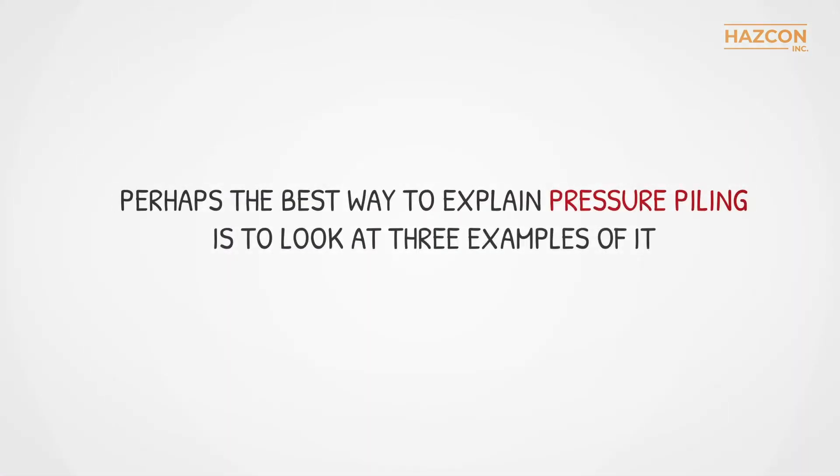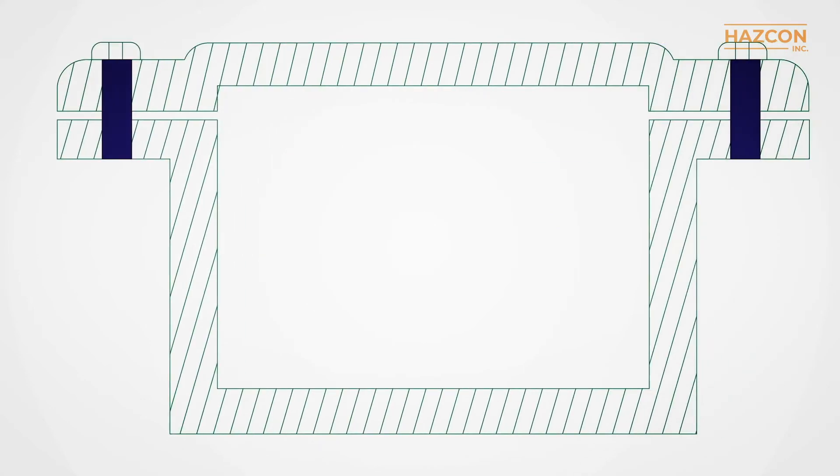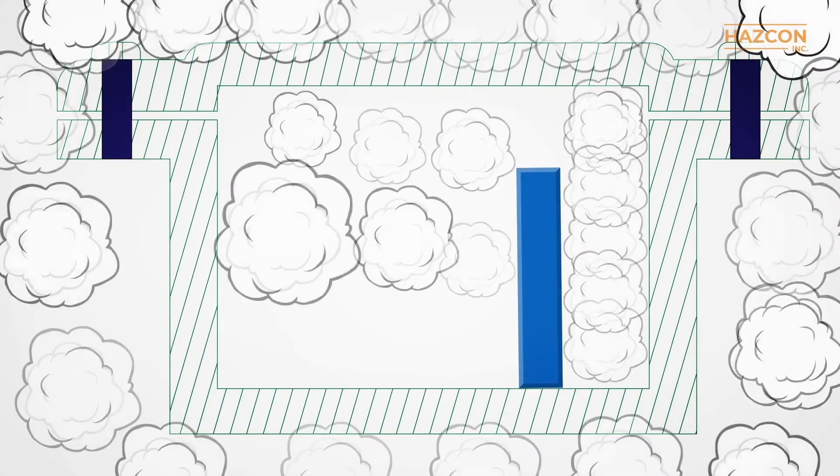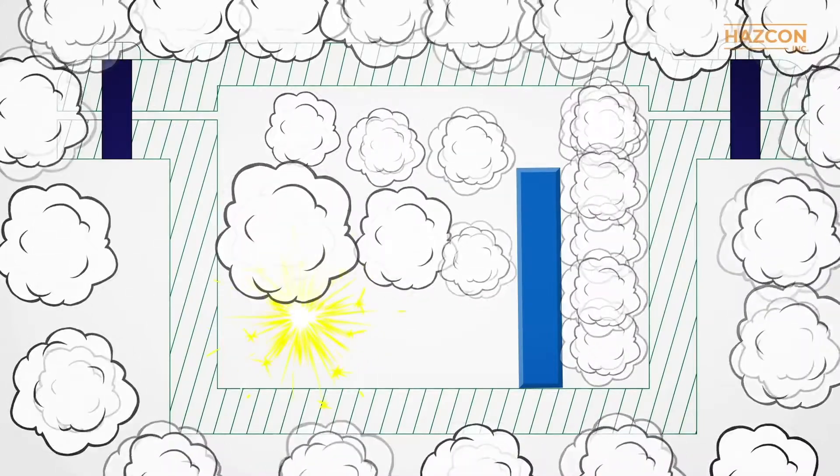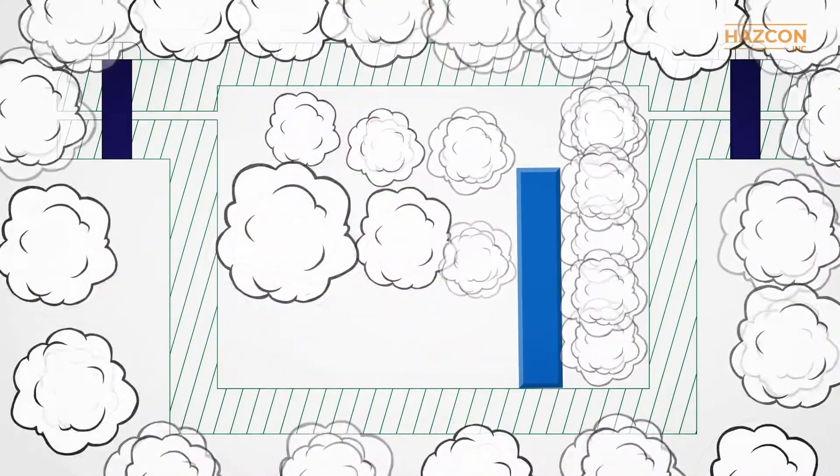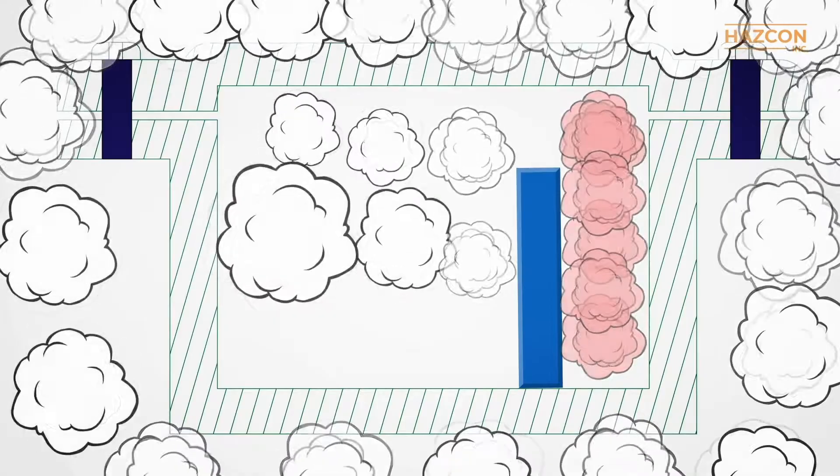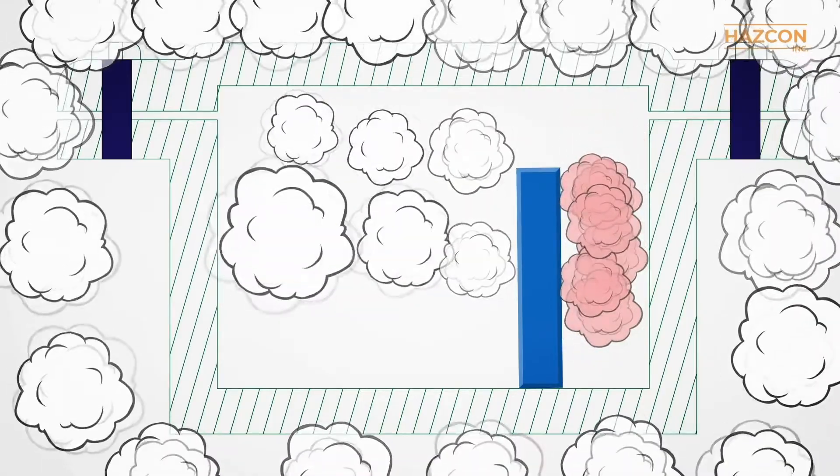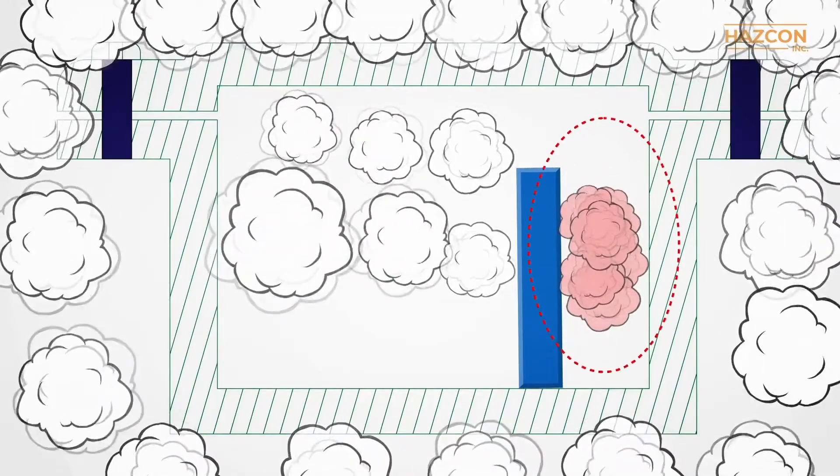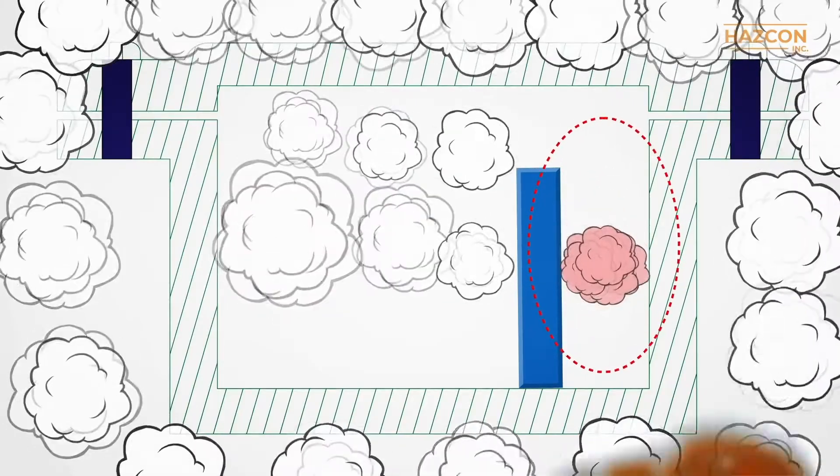Perhaps the best way to explain pressure piling is to look at three examples of it. In our first example, the design of an explosion-proof enclosure with two or more compartments allows unburned gas to collect in a particular space within the enclosure. The unburned gas in this space becomes compressed and therefore highly pressurized before being ignited. This pressure piling effect will lead to a higher explosion pressure.